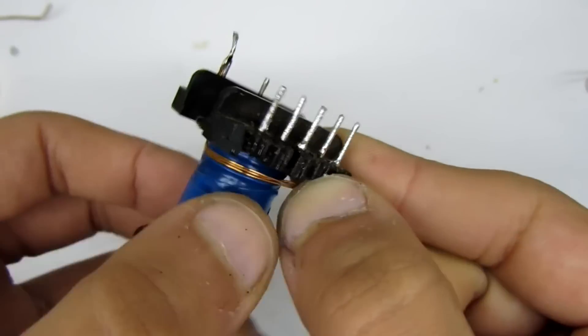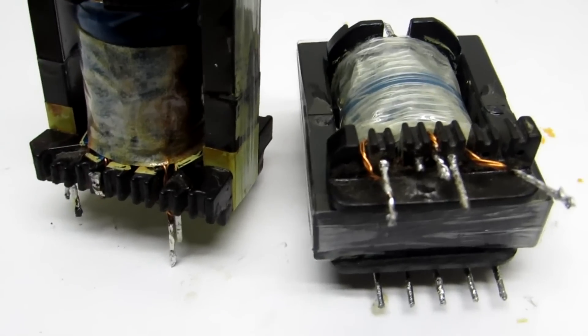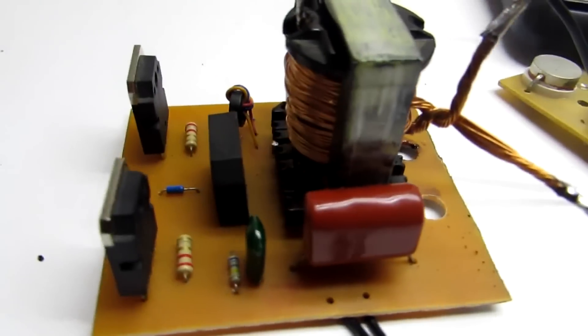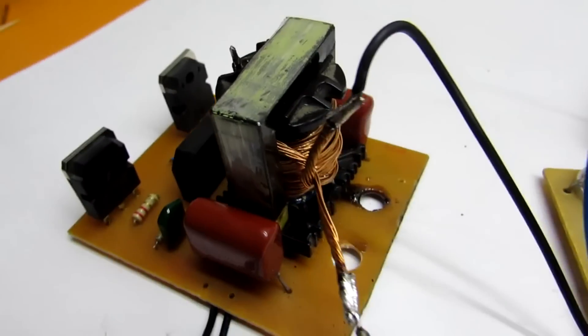Since I didn't find the calculation program for similar schemes, parameters of secondary winding was found experimentally. In my case, one turn gives 2 volt. Of course, it's different for other transformer core.